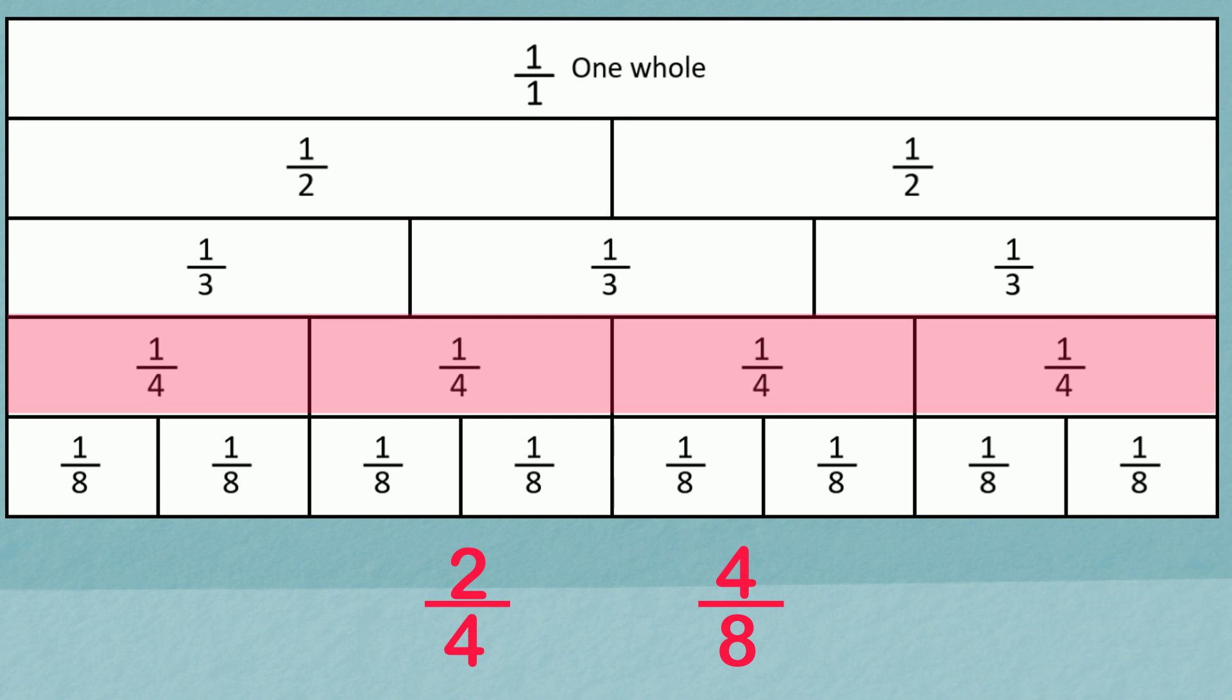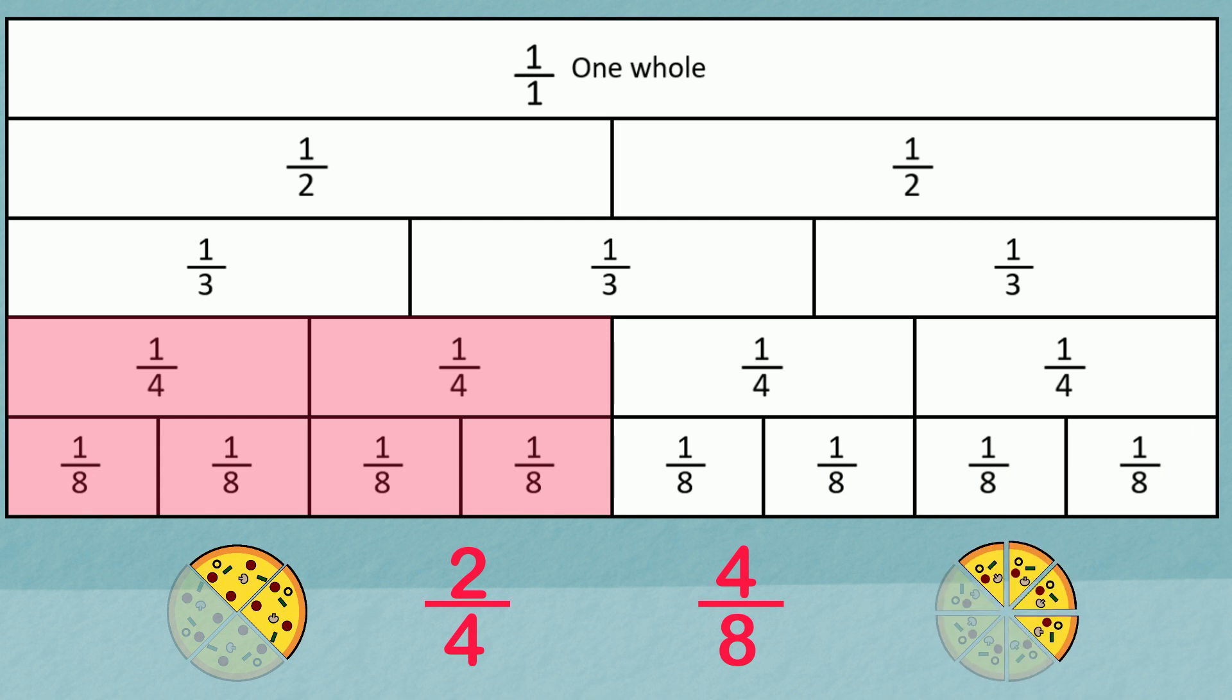Here are quarters. And here is two quarters, the fraction Sam ate. Here are eighths. And here is four eighths, the fraction Lily ate. We can see that they are equivalent.